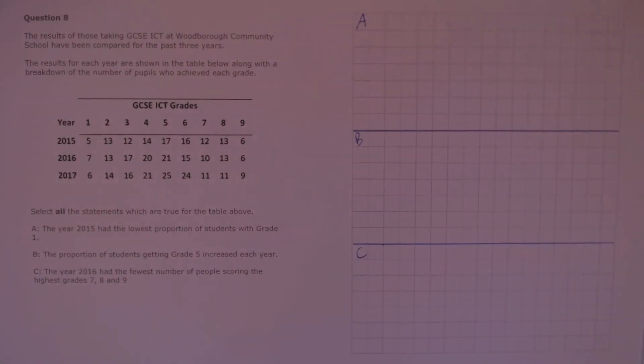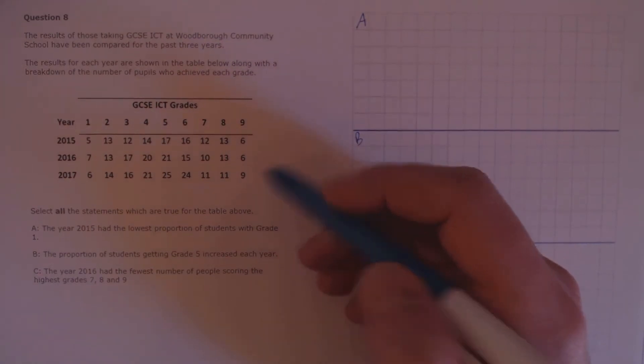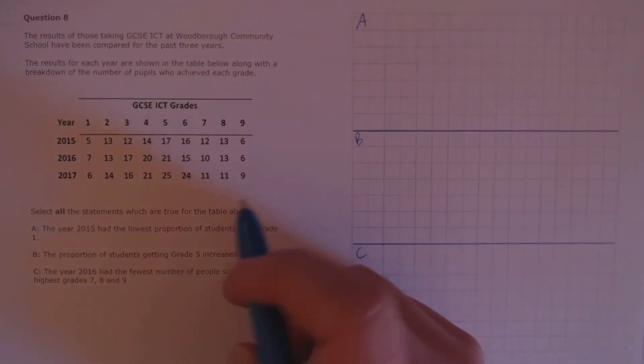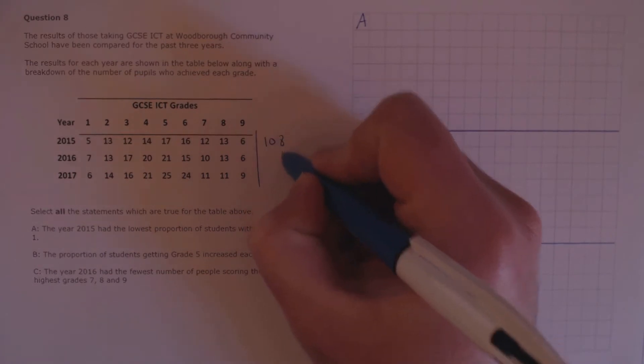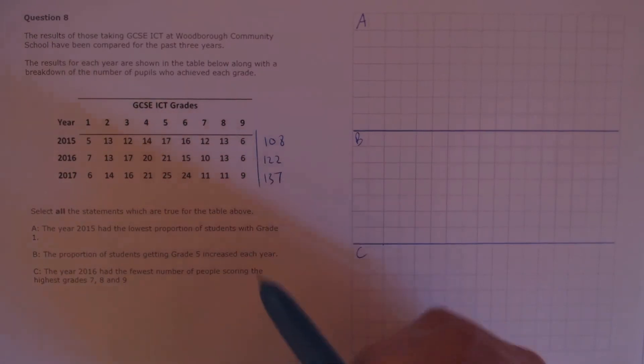Question 8. The results of those taking GCSE ICT at Woodborough Community School have been compared for the last three years. The results for each year are shown in the table below, along with the breakdown of the number of pupils who achieved each grade. Select all the statements which are true for the table above. A. The year 2015 had the lowest proportion of students with grade 1. First, we need the total number of students in each year before we can calculate proportion. For each of these years, the totals are 108, 122, and 137, just by summing along the row.